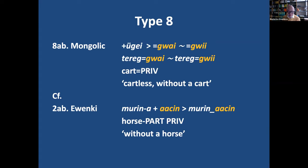A very similar construction we have also in Tungusic — like in Khamnigan Evenki, *murina-aačin*, 'without a horse'. This *aačin* is a noun used postpositionally, and in a very similar way to Finnish *ilman*, because in Evenki this construction also contains the partitive case. It is becoming very similar to the Mongolian construction, in which the privative element is becoming a clitic.